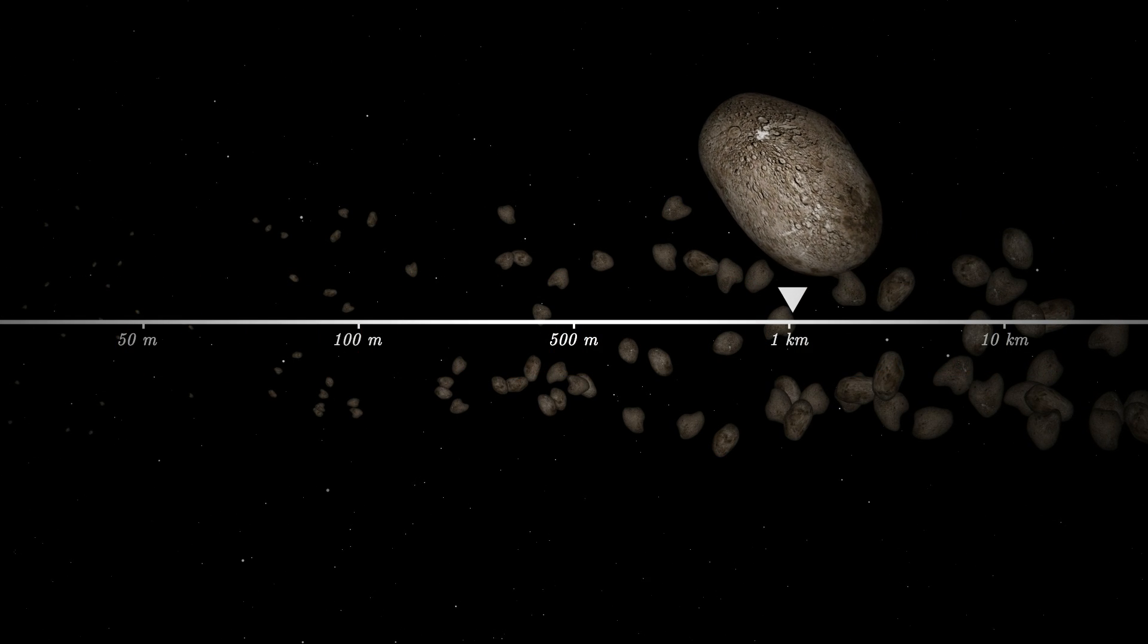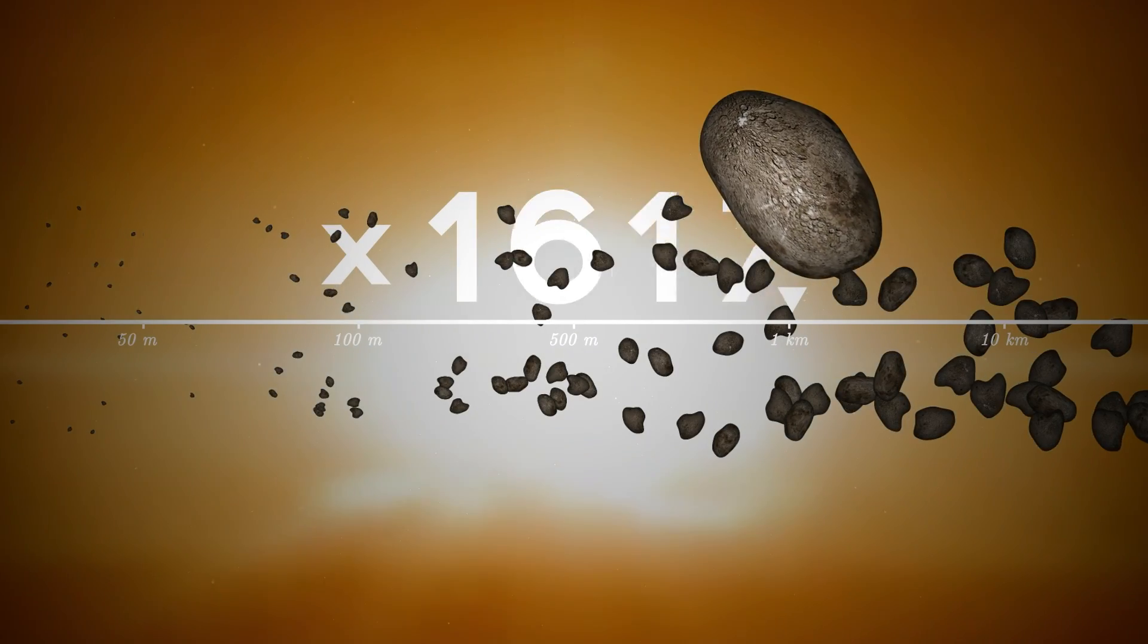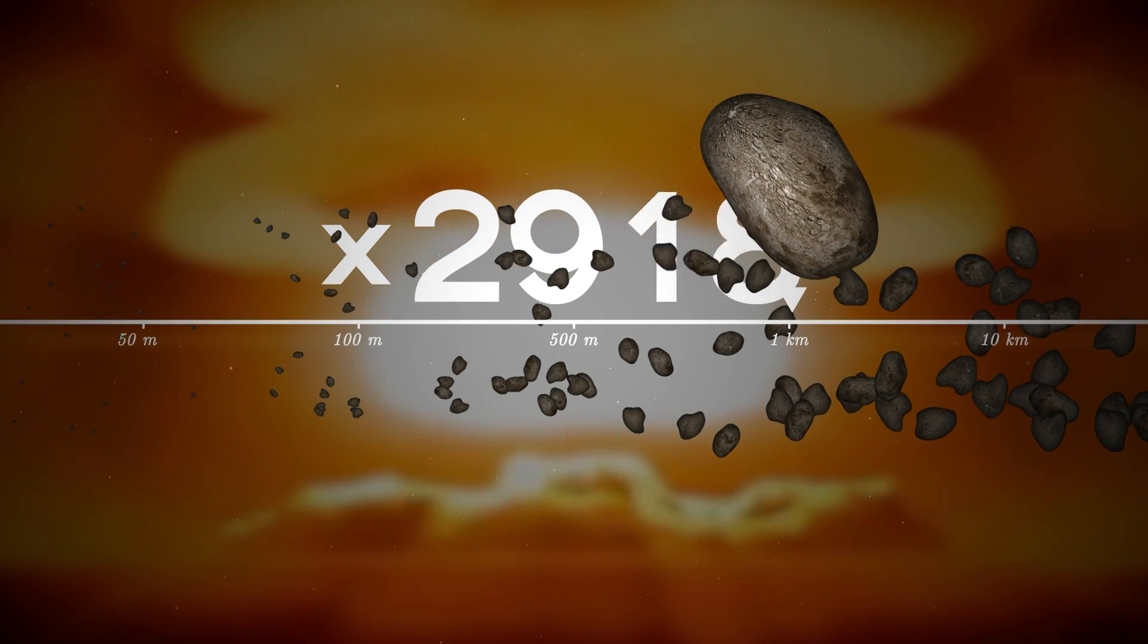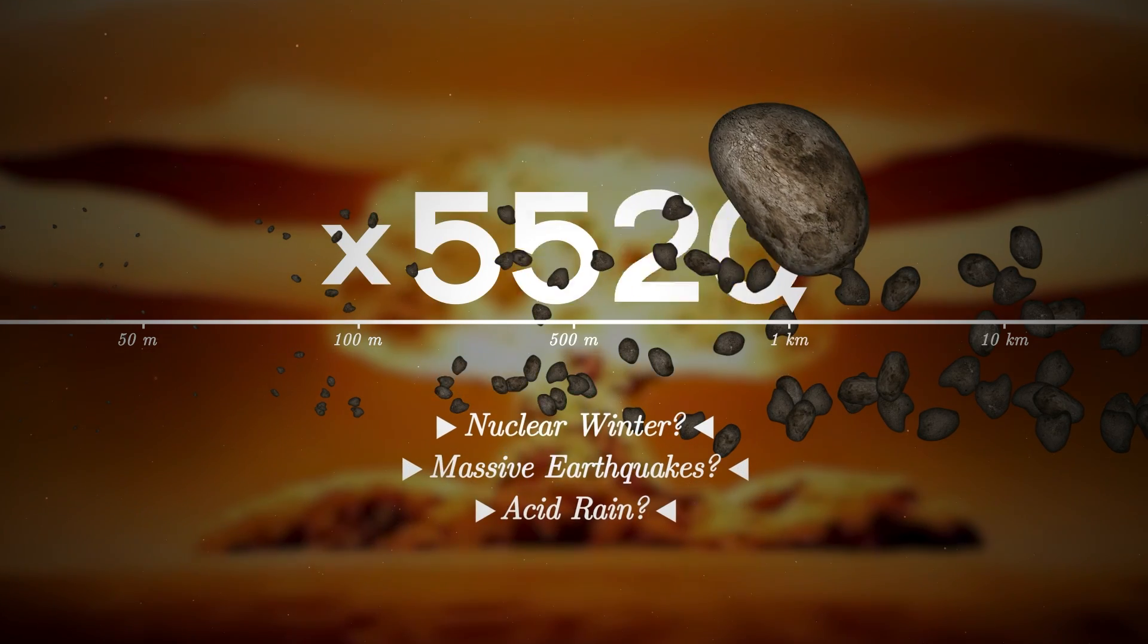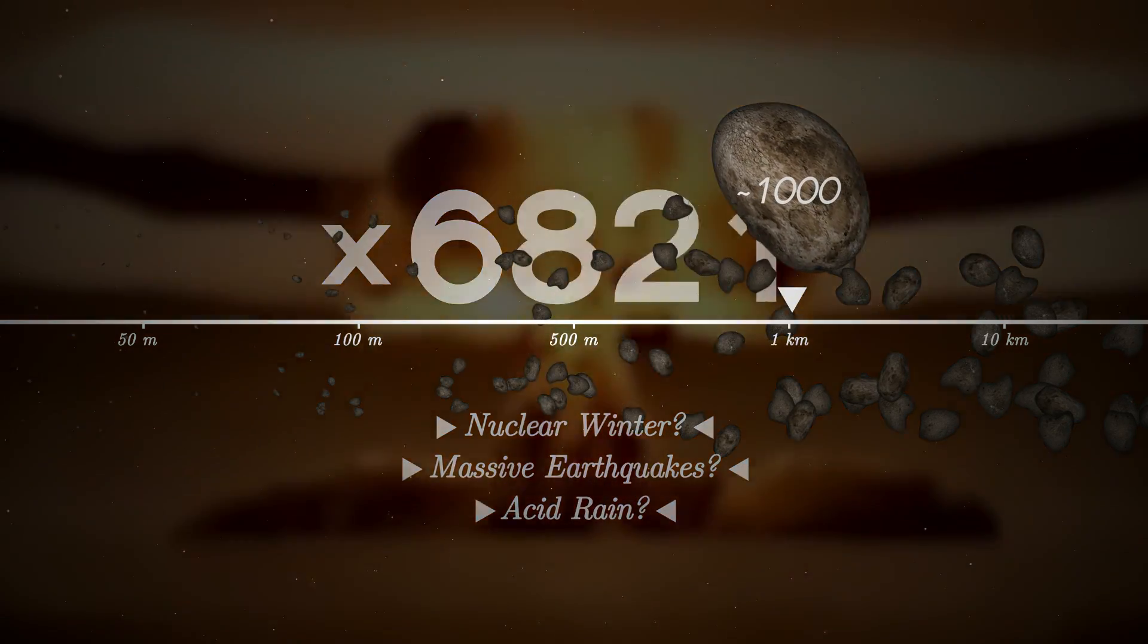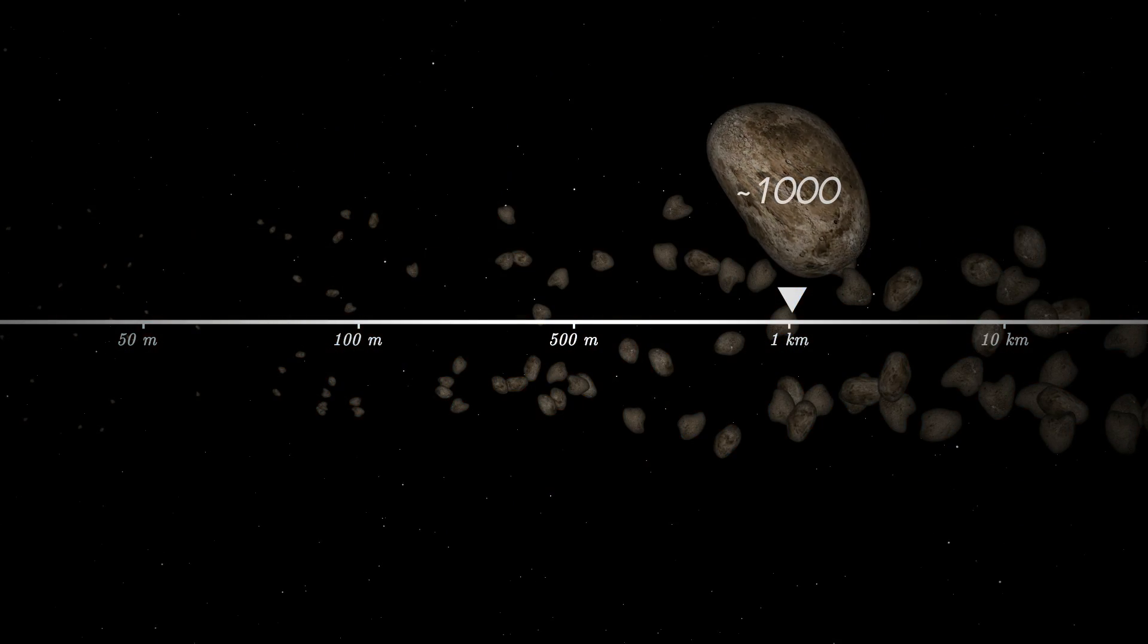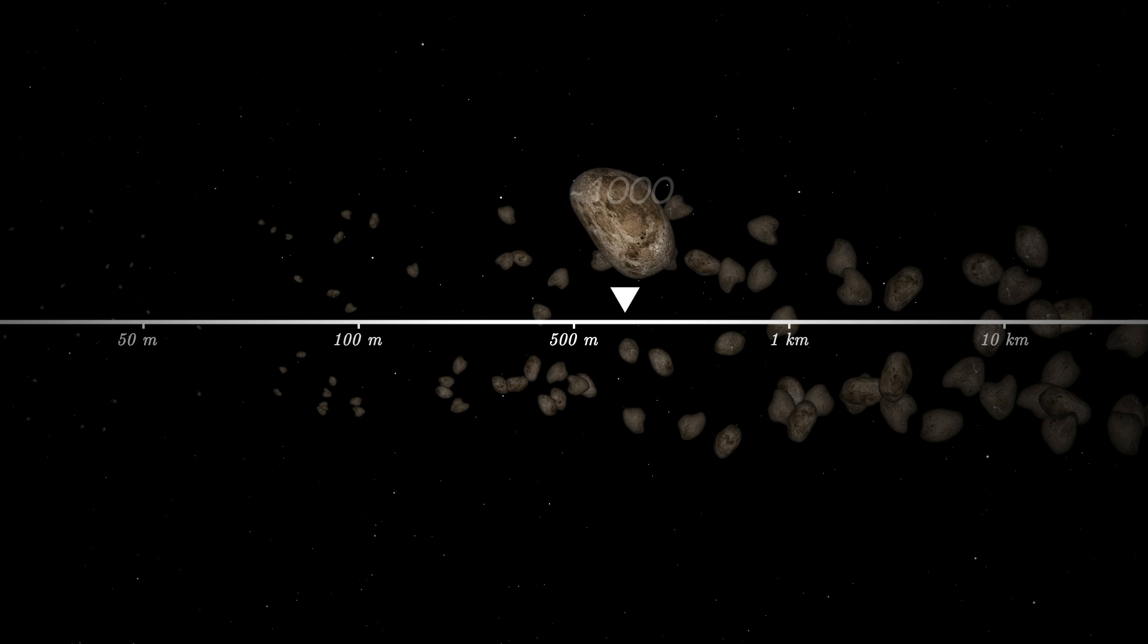But even asteroids one kilometer across are pretty devastating. An impact from one of these would be the equivalent of thousands upon thousands of atomic bombs, putting our entire civilization at risk with all sorts of undesirable climate effects. Experts estimate there are about a thousand of these.